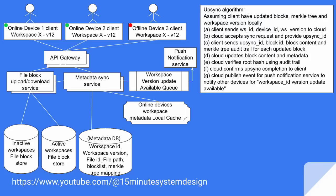Now let's discuss the upsync algorithm — how upsync happens. Assuming the client has updated blocks and Merkle tree with workspace version also being updated locally, and the client wants to upsync this data to the cloud: the client sends workspace ID, device ID, and workspace version to the cloud. The cloud accepts the sync request and provides an upsync ID because the workspace version the client sent was a higher version than what cloud is maintaining. The client then sends the received upsync ID along with block ID, block content, and Merkle audit trail for each updated block. The cloud starts receiving this content, updates metadata and block content, and verifies the root hash using the audit trail.